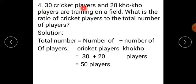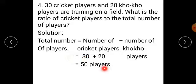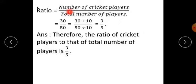Question number 4: 30 cricket players and 20 koko players are training on a field. What is the ratio of cricket players to the total number of players? Solution: Total number of players = number of cricket players + number of koko players = 30 + 20 = 50 players. Therefore, there are 50 players on a field. Ratio = number of cricket players upon total number of players = 30 upon 50.